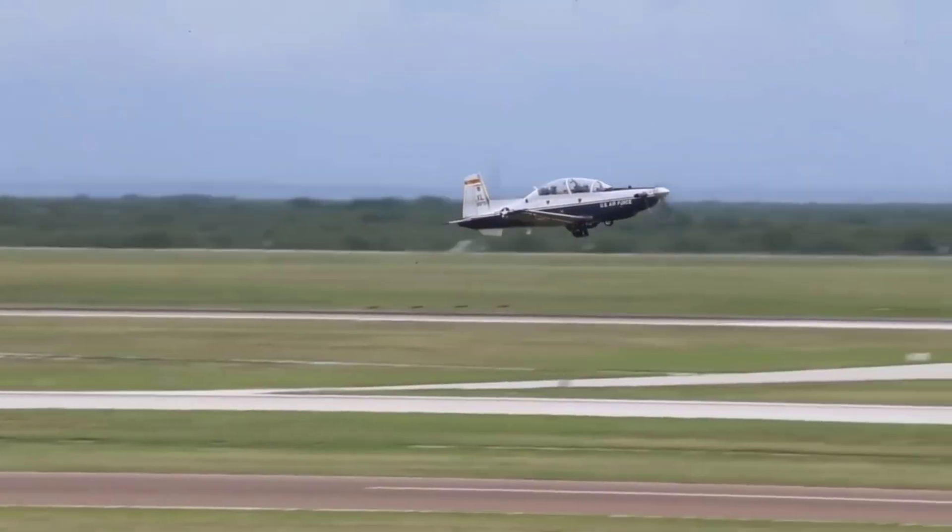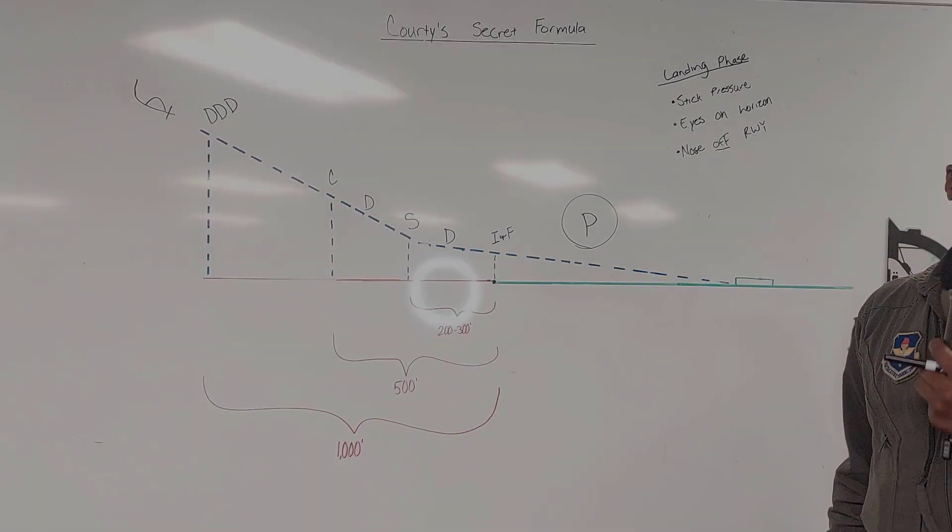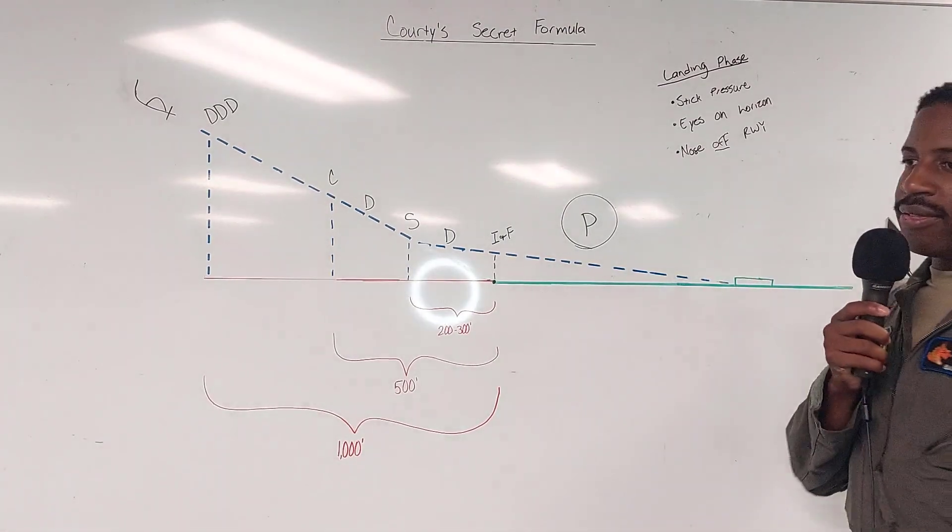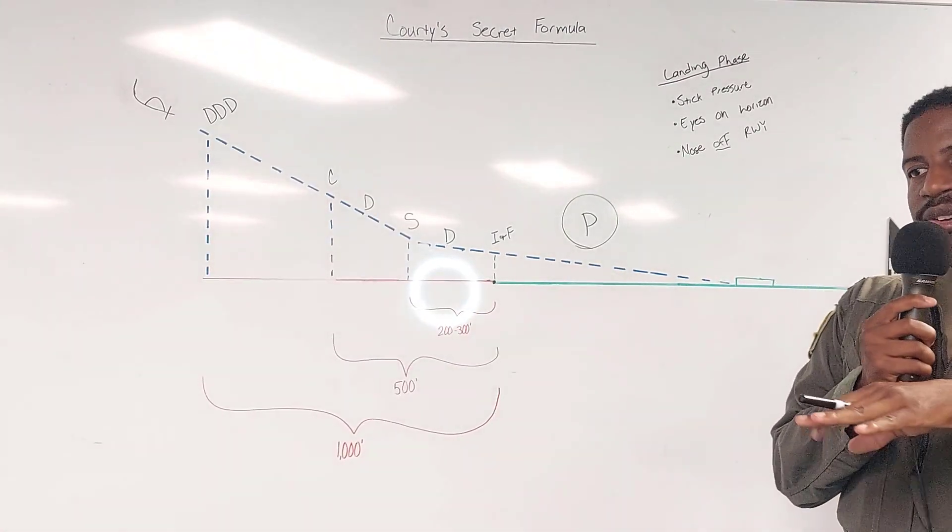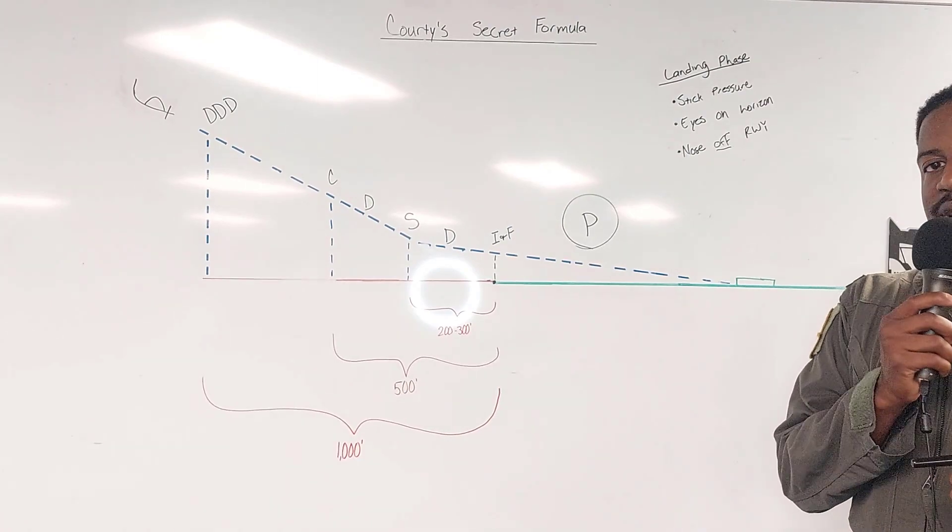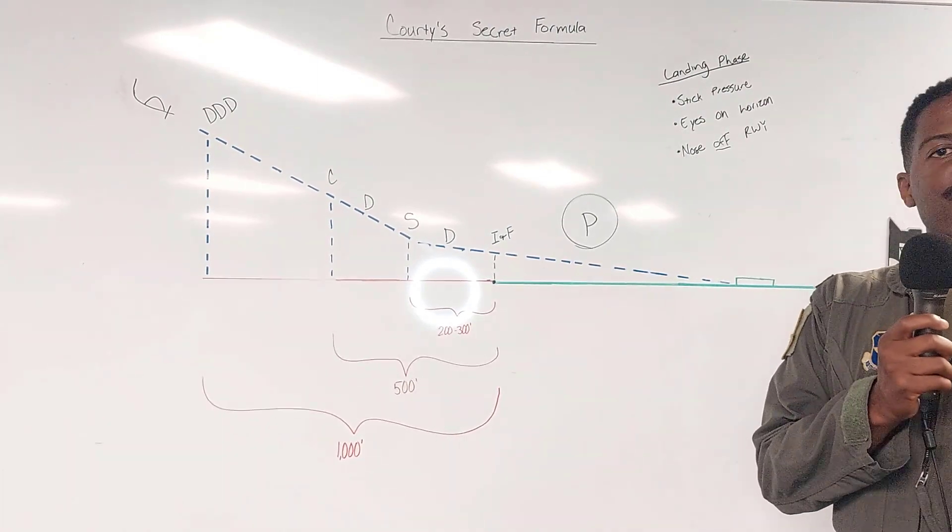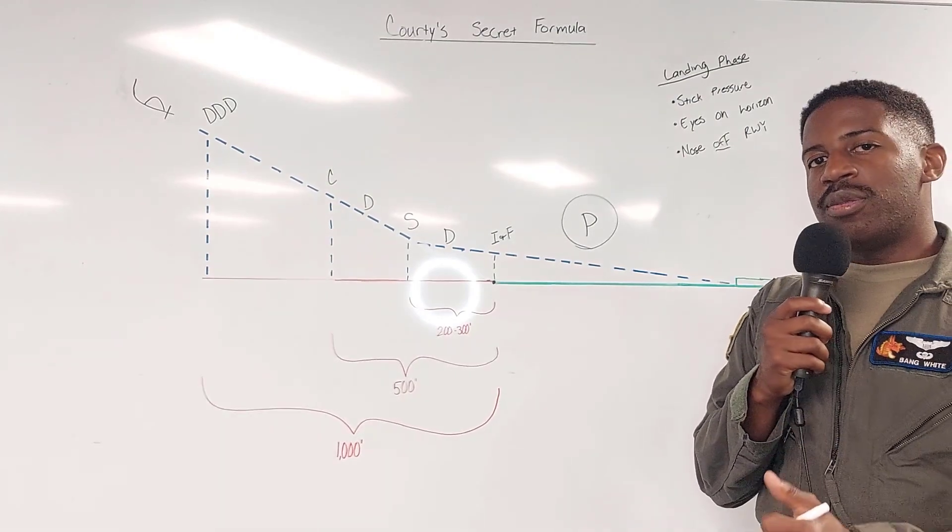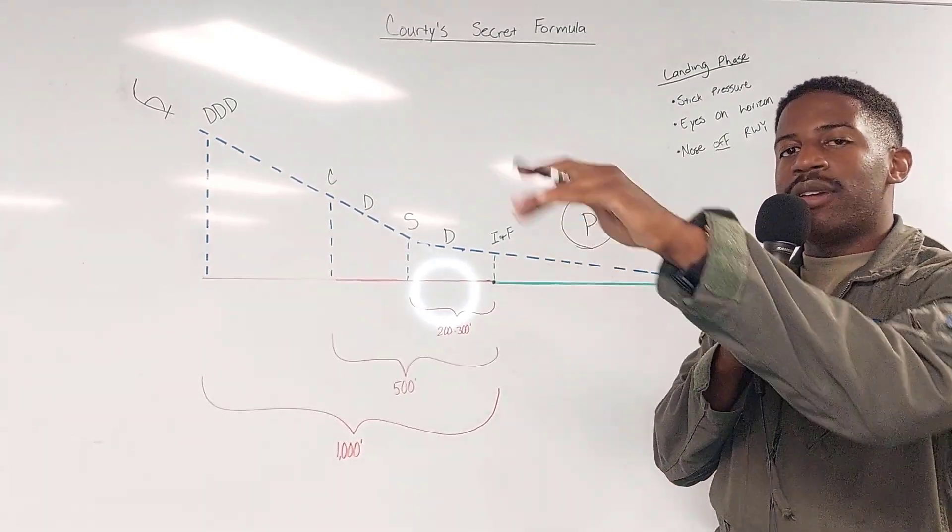When we lift off, we want to maintain seven to ten degrees nose high. We don't want a tail strike, we definitely don't want to stall, but keeping that nose off the runway, you're going to really feel the plane want to settle down. So we're just going to increase the back stick pressure. As our airspeed increases, those wings get more efficient, start producing more lift, we'll need a little bit more forward stick pressure and the plane will very gently lift off the ground.